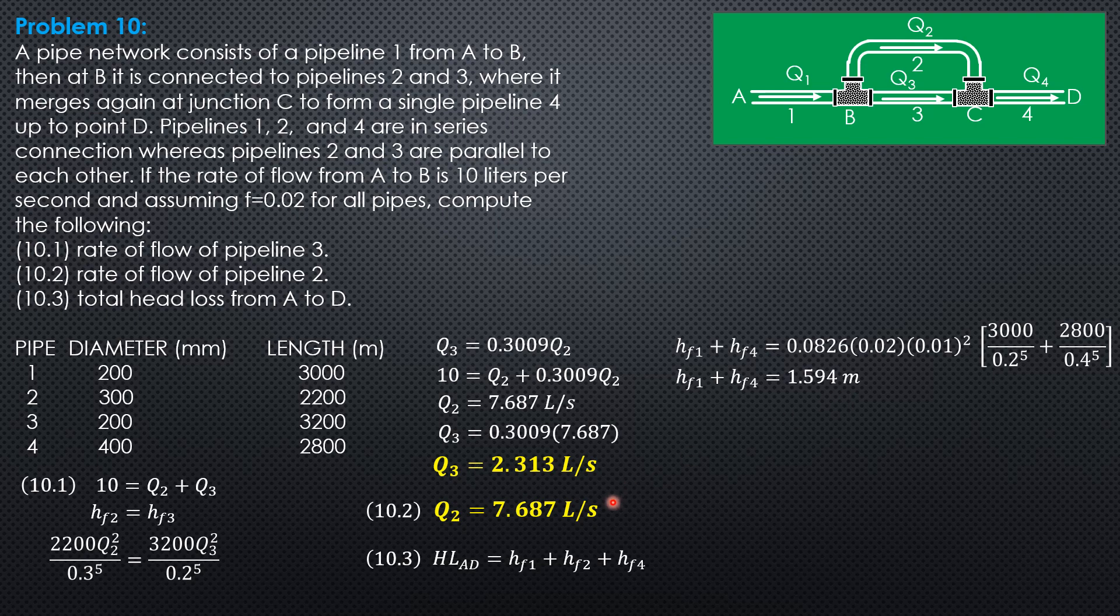Next, we compute HF2 which is 0.0826 times 0.02. Discharge 0.007687 square. The length of pipe 2 is 2,200 diameter 0.3 to the 5th. So, HF2 is 0.0838 meter.